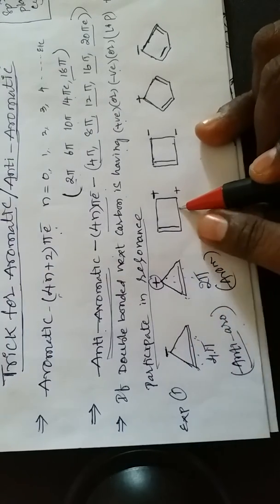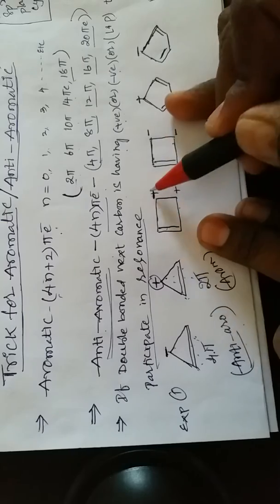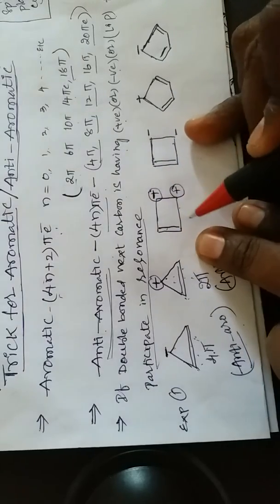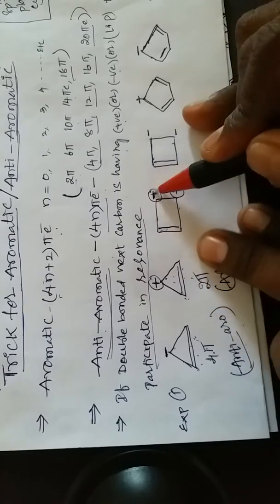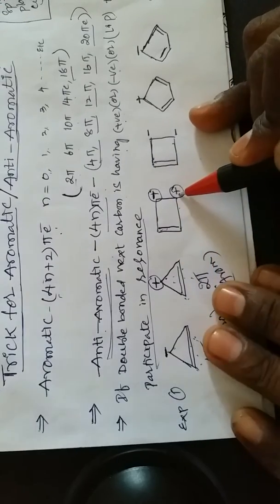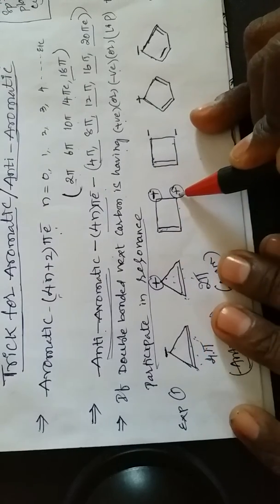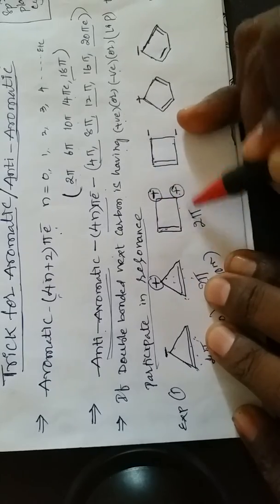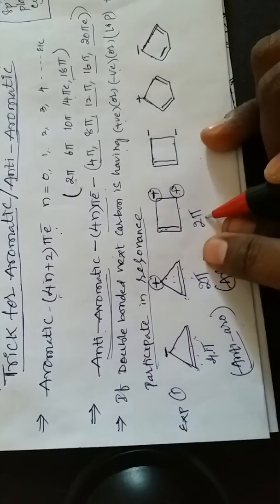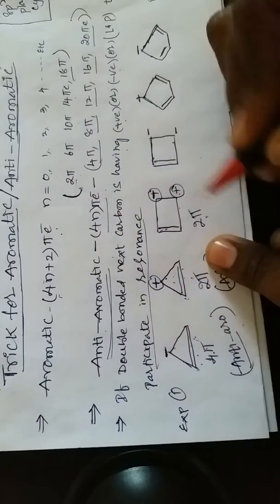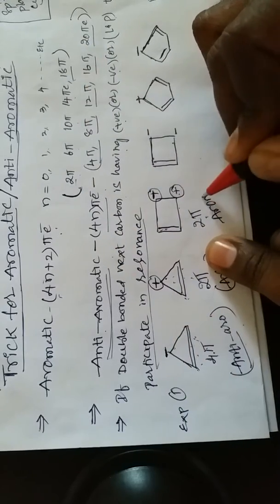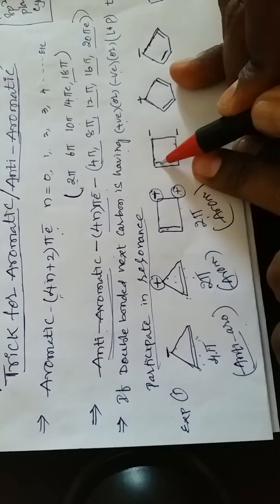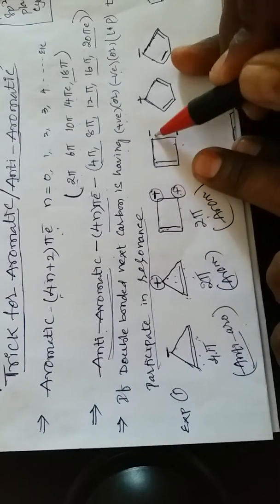Third example: there is a double bond, and the next carbon again has a positive charge, participating in resonance. The total number of pi electrons is only 2. Since 2 pi electrons corresponds to 4n+2 with n=0, this is also aromatic.